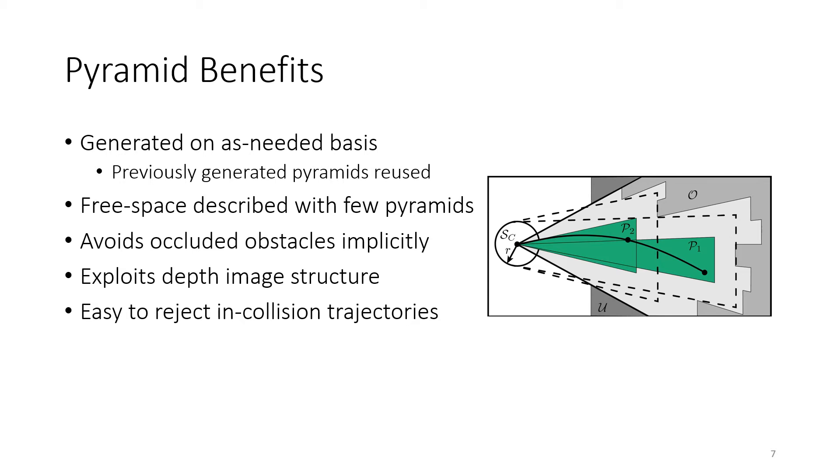As I mentioned before, an example of this is if I have a trajectory that tries to go through a wall, the first thing I'm going to do is look at the endpoint of that trajectory, see that the depth pixel corresponding to that endpoint is at a depth that's closer than the endpoint, and immediately reject that trajectory without having to read any of the other pixels in the depth image.